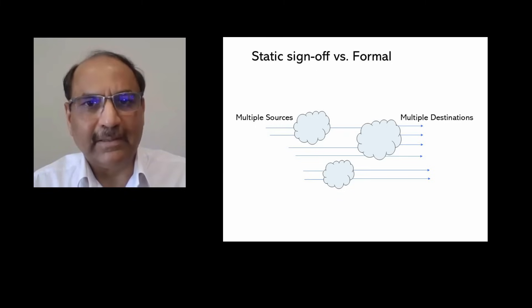A key difference is that static sign-off can analyze hundreds of millions of gates in minutes. This is orders of magnitude faster than formal verification.